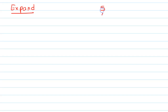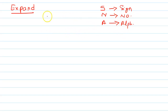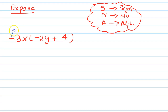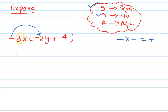Now we are going to revise expanding brackets. Always follow the SNA rule: S stands for sign, N stands for number, and A stands for alphabet. The question is minus 3x times (minus 2y plus 4). First multiply the signs: minus times minus becomes plus.